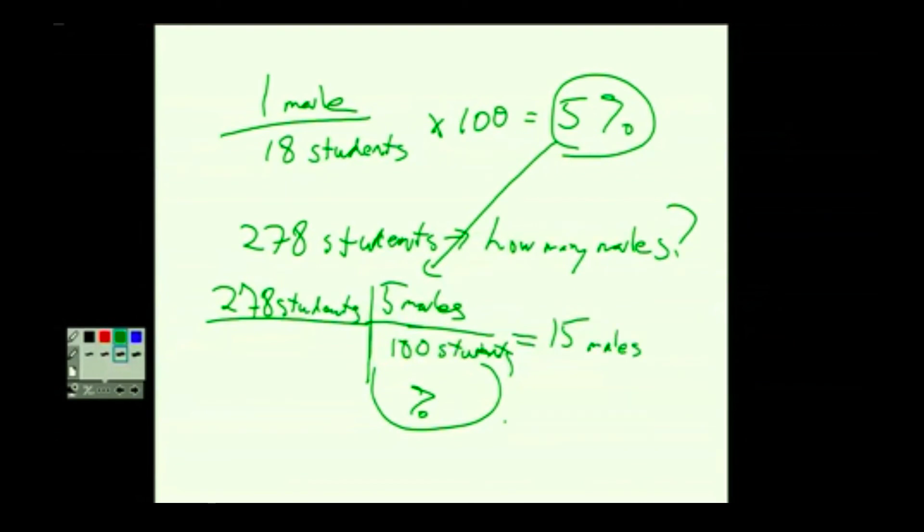What was it, like 14 point something? 15.2. 15.29. Can't have 0.29 people, right? So 15 males out of 278 students. If that percentage held true throughout. Okay?